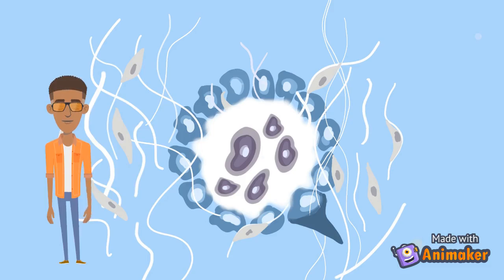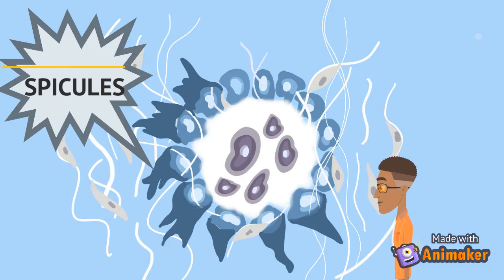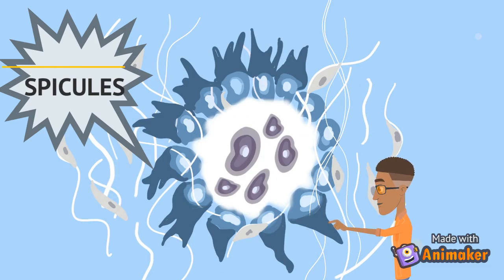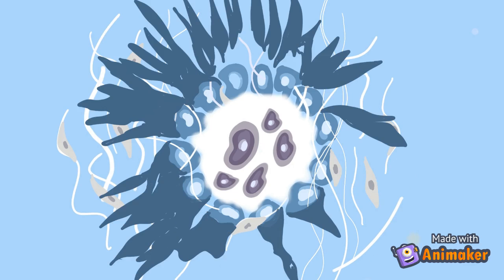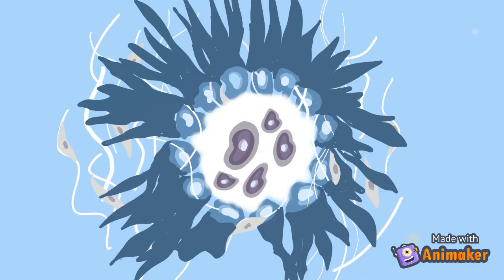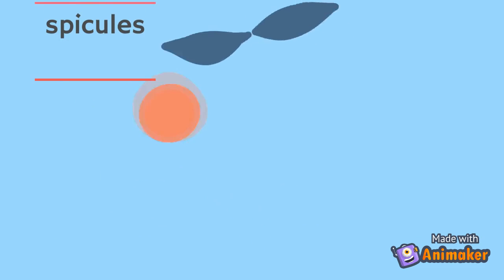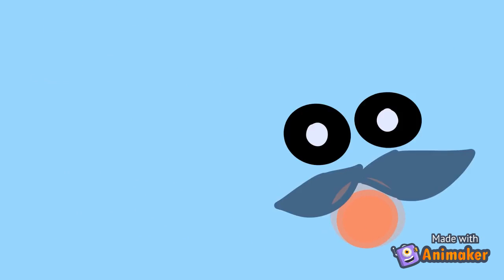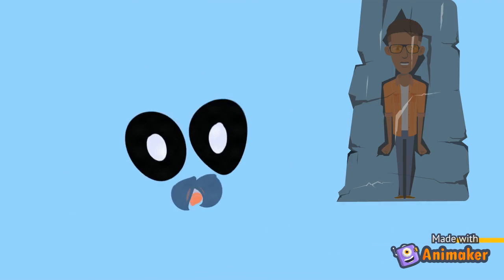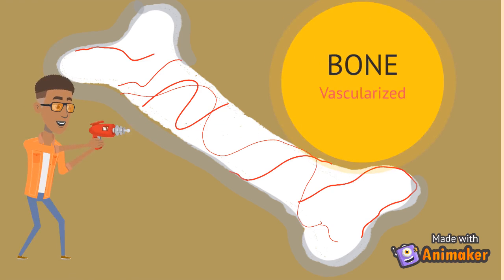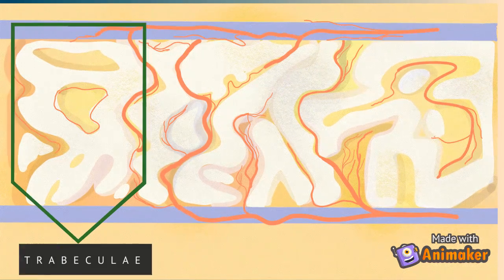Ossification then continues with spicules formed from the developing osteoblasts. These branch-like structures grow outward from the ossification center. The spicules continue to grow and touch one another. At the same time, blood vessels migrate into the area between spicules. Later, the spicules trap the blood vessels and allow the bone to be vascularized.